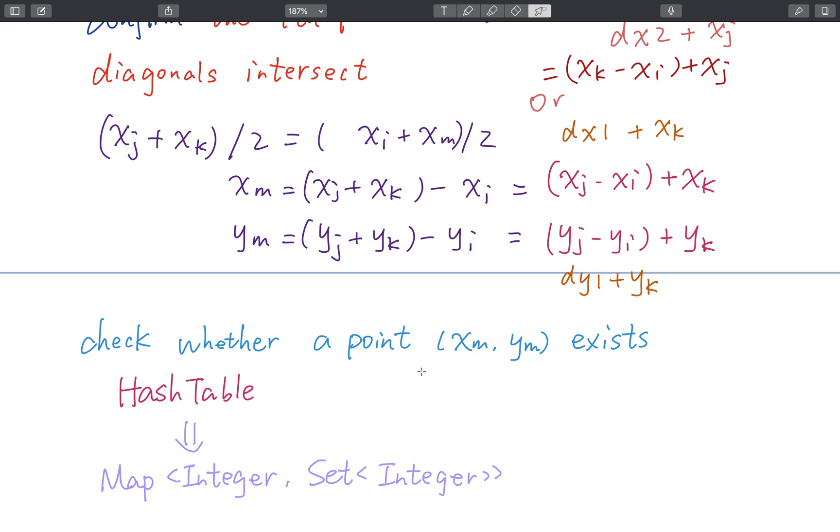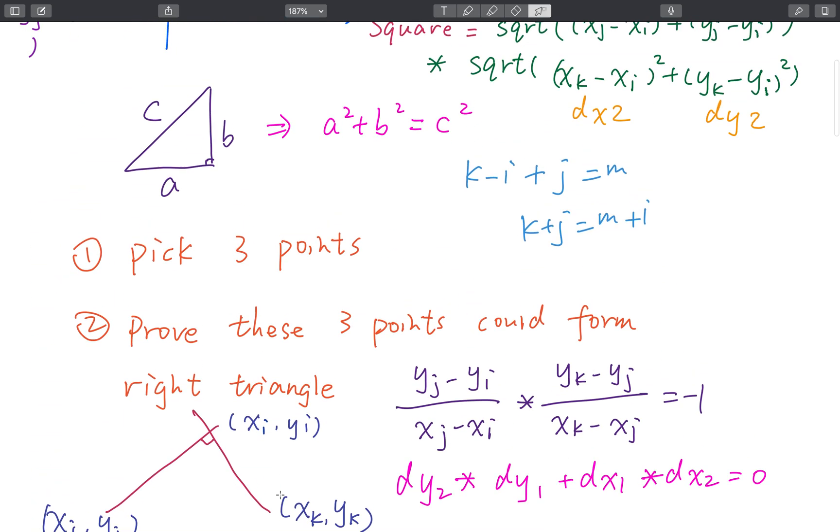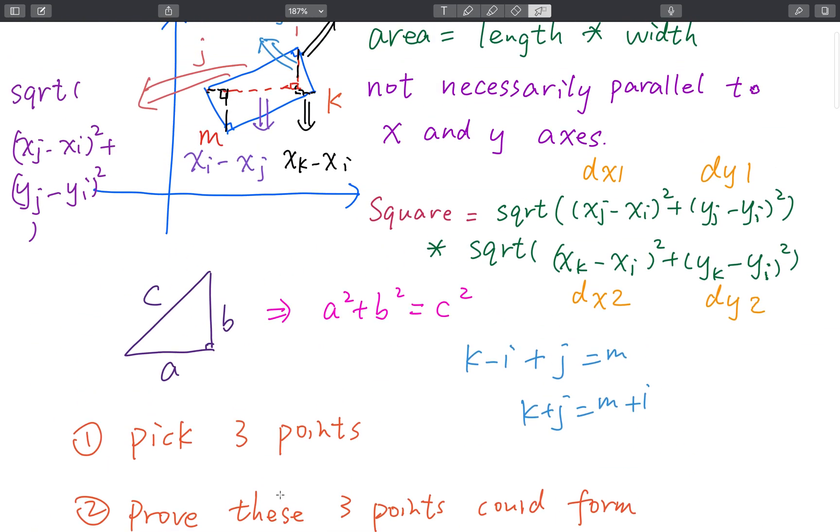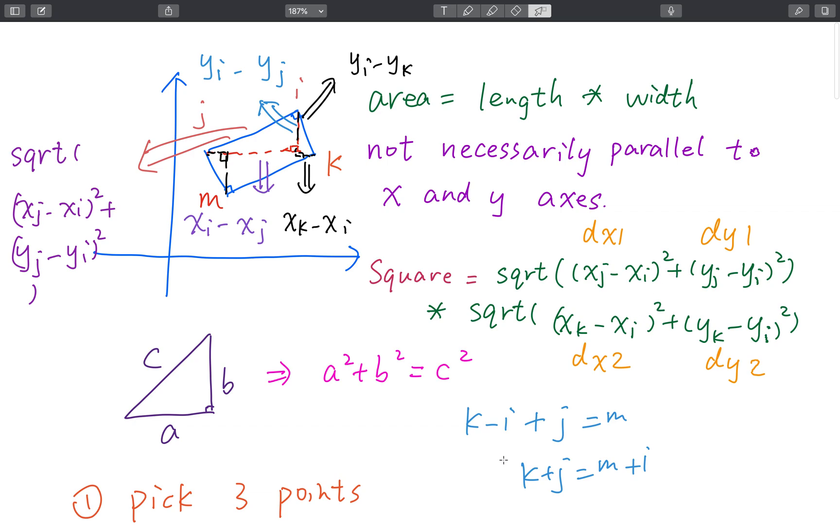So we just check whether this point exists in the map. If it exists, we can calculate their area by this formula. Otherwise, we just keep checking.